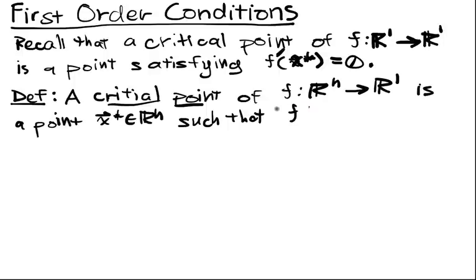the gradient of f at x* is equal to the zero vector. So this is just our n-dimensional analog.